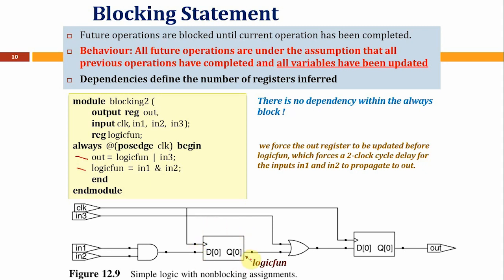Why is a register created? Execution is sequential, so out is computed first using logic_fun — but at that point logic_fun has not yet been updated. Logic_fun needs its previous value. Since logic_fun is used before it is updated in that same clock cycle, the previous value must be stored — meaning logic_fun needs a storage element, i.e., a register. Then in the second statement, logic_fun is updated with in1 AND in2 for use in the next cycle.